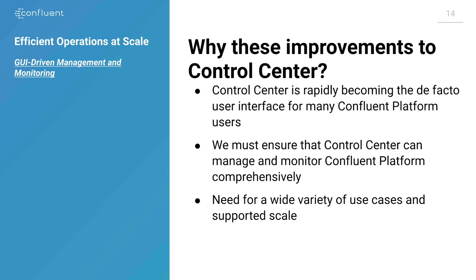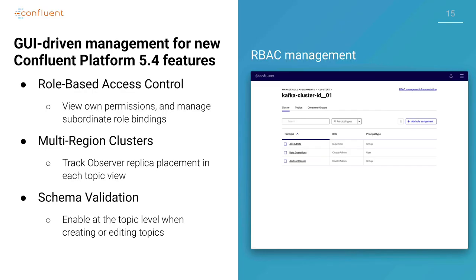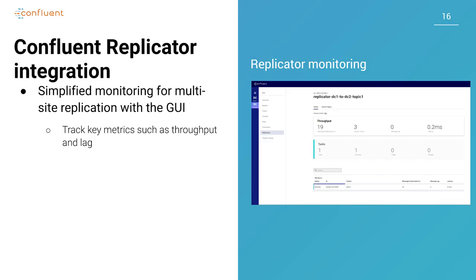Let's talk about efficient operations at scale. Control Center is the de facto standard for monitoring and managing a Confluent Platform cluster. Everybody has their own observability story broadly, but Control Center matters as the purpose-built best way to get insight into your Confluent Platform cluster. The features I just talked about — role-based access control, multi-region clusters, schema validation — all those are baked into Control Center. We now have native GUI access to manage all three of those features, plus simplified monitoring for multi-site replication.